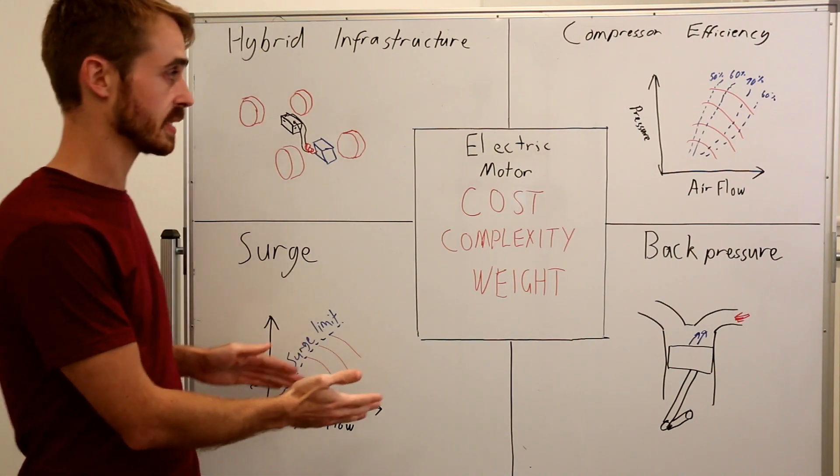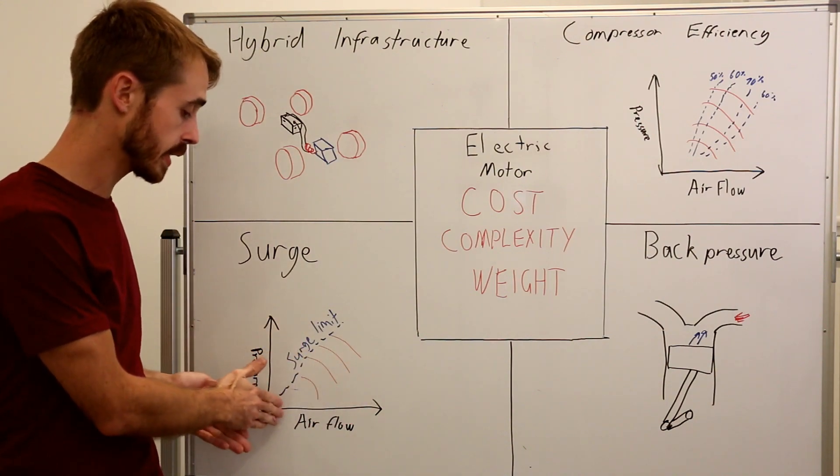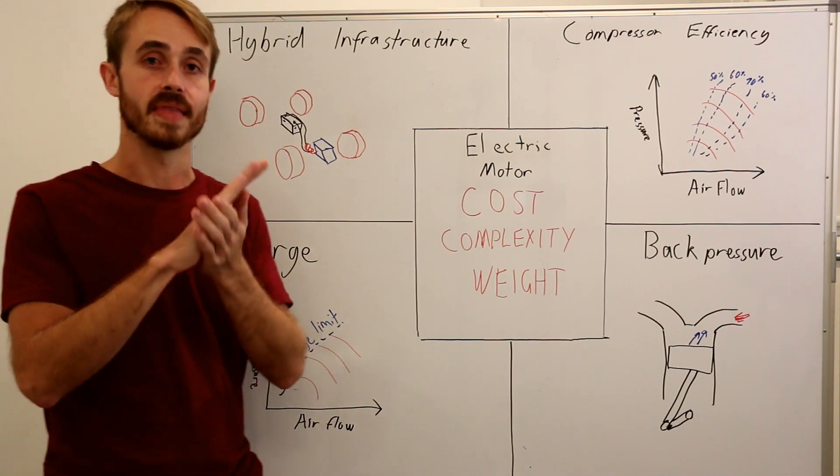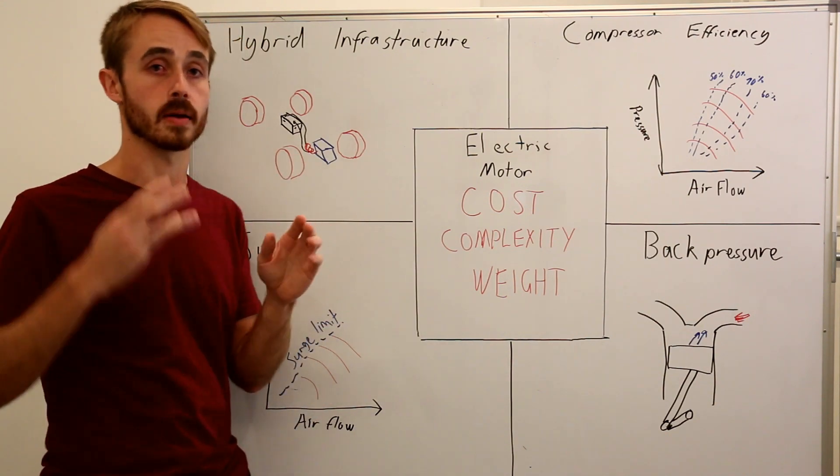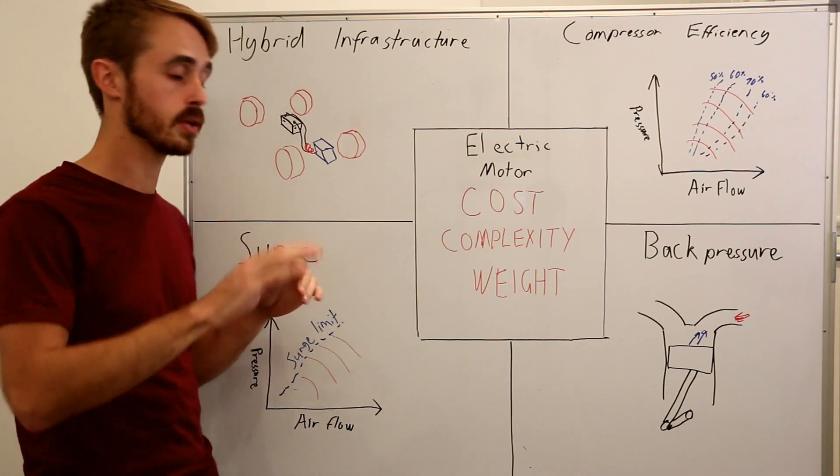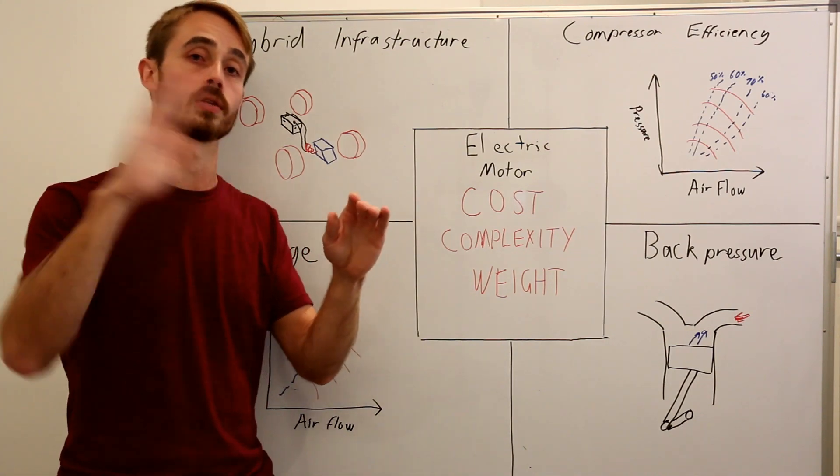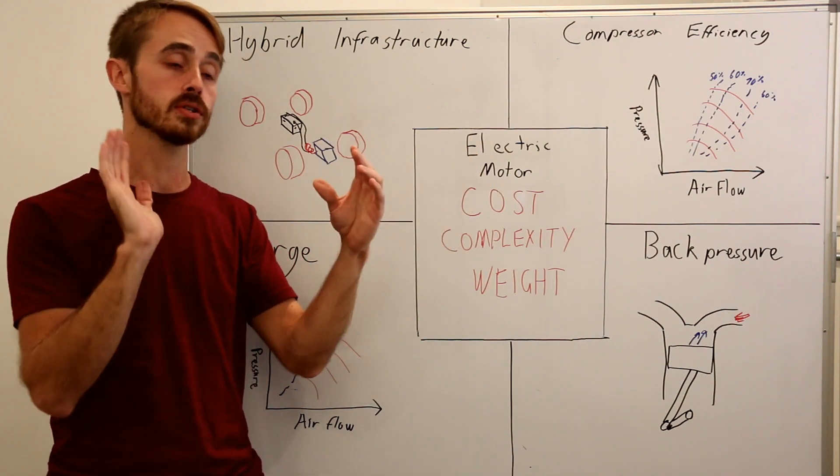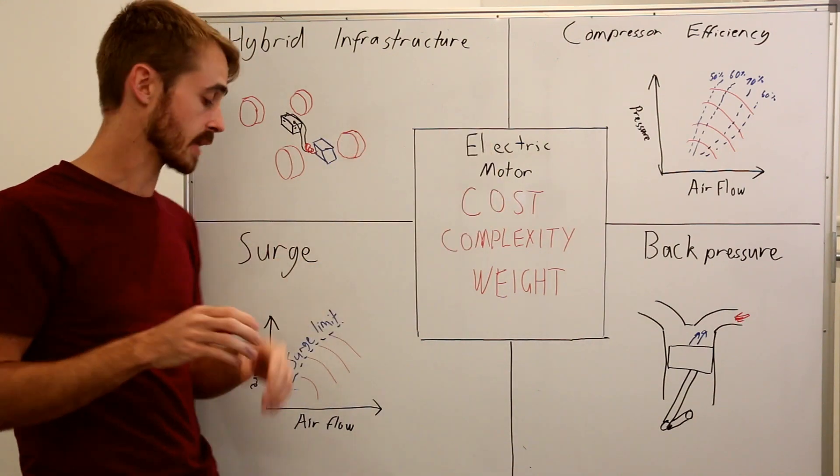And the surge limit is basically when we are at a very low air ratio and a very high pressure ratio. That will generally cause our compressor to surge. So this is why you get that noise when you lift off, if you didn't have a bypass valve or a blow off valve. Because as you lift off,